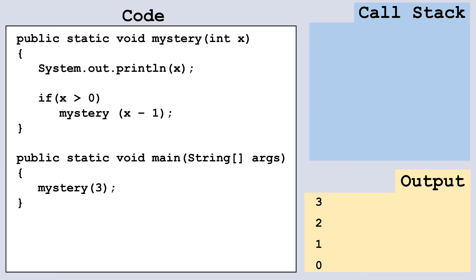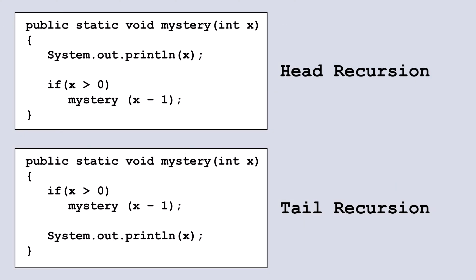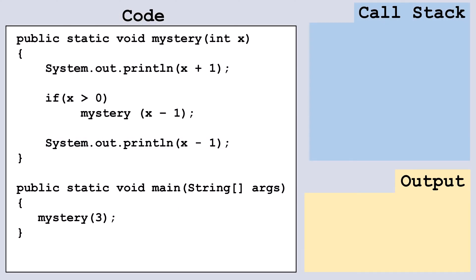You can see the ordering of the outputs is opposite to our head recursion example. Let's take a look at the full Java code for both the head recursion and tail recursion mystery methods side by side. As you can see, the primary difference between the two methods is the placement of the recursive call — in head recursion the call occurs before the other processing, while in tail recursion the call occurs after the other processing. Now let's examine a third code example which demonstrates a method that combines both head and tail recursion techniques to showcase their effects within a single code snippet.